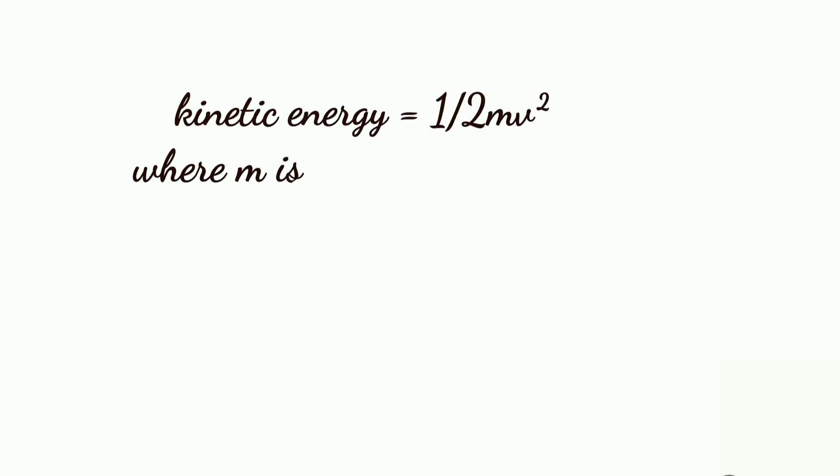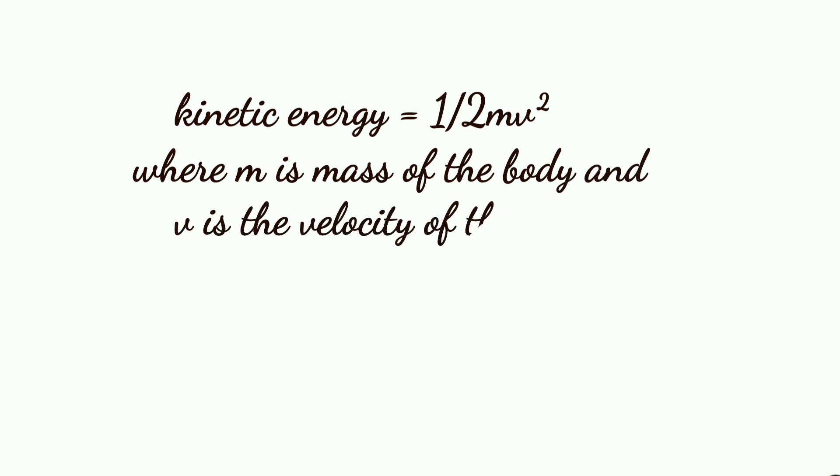Kinetic energy equals to half mv squared, where m is the mass of the body and v is the velocity of the body. The SI unit of kinetic energy is joule and CGS unit is erg.